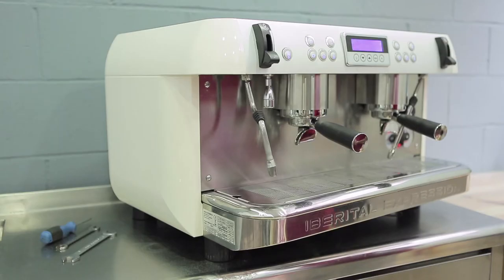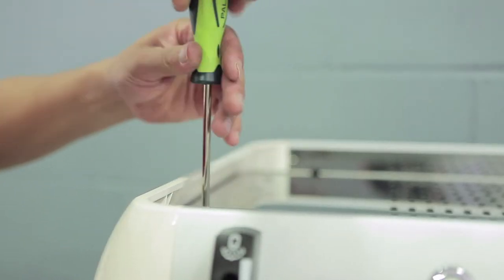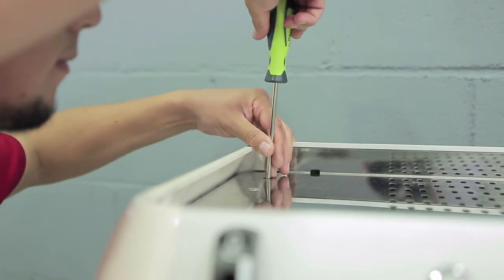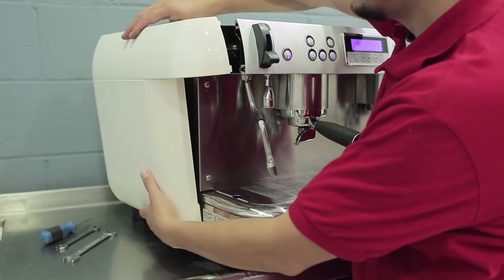We are going to set the pressure of the pump. To begin with, we use a Phillips screwdriver to loosen the screws. Once we have loosened the screws, we remove the side part to reveal the pump.